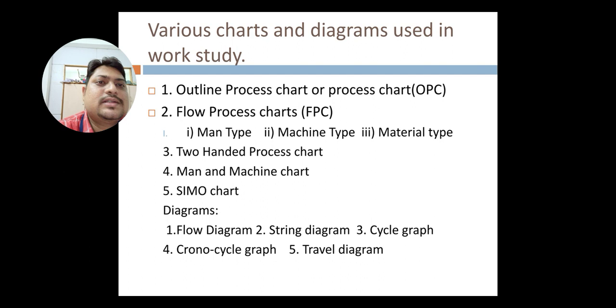Second is flow process chart. Flow process chart is generally of three kinds: man type, machine type, and material type. In flow process chart, you need to get complete information about the operation, inspection, transportation, delay, and storage of the particular production work.